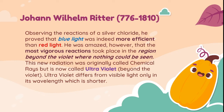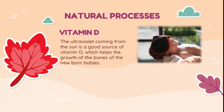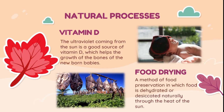Ultraviolet differs from visible light only in wavelength, which is shorter. In natural processes, ultraviolet is present in vitamin D synthesis — the ultraviolet coming from the sun is a good source of vitamin D, which helps the growth of the bones of newborn babies. In food drying, ultraviolet supports a method of food preservation in which food is dehydrated or desiccated naturally through the heat of the sun.